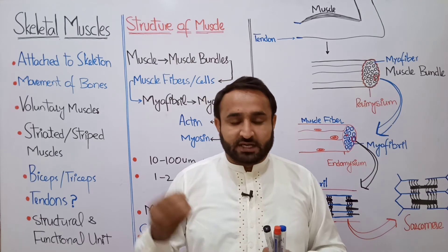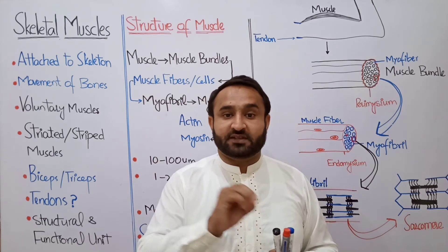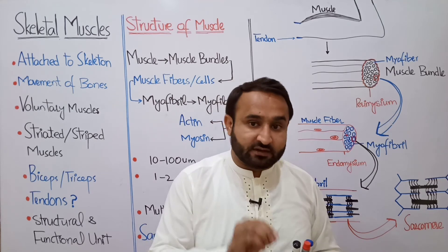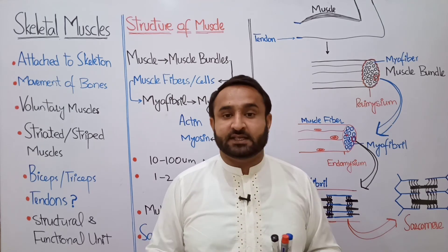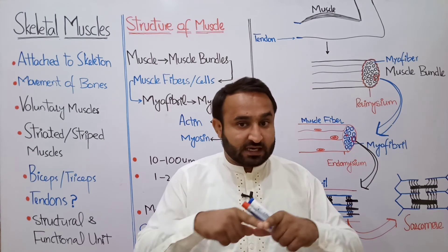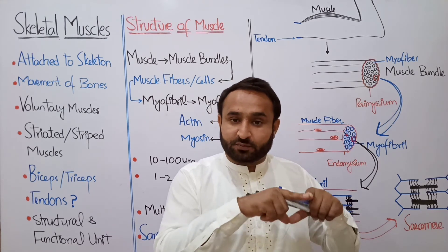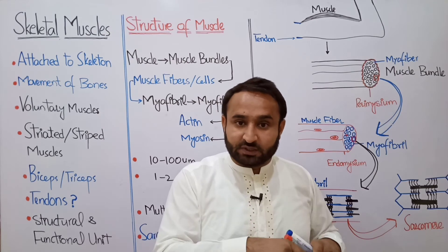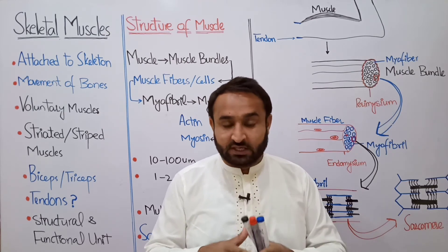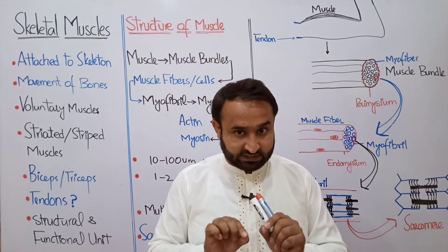The endoplasmic reticulum of the muscle cell has a specific name: sarcoplasmic reticulum. It has two distinguishing features: first, it does not have ribosomes attached to it; second, it stores calcium ions, which play a key role in muscle contraction and relaxation.